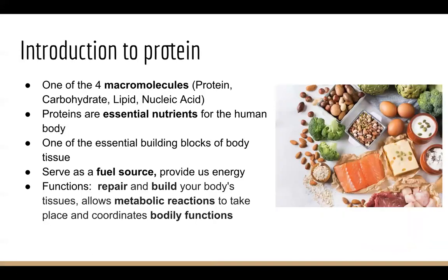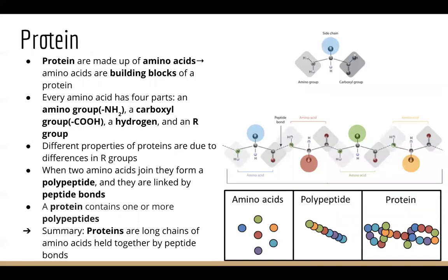But what is protein? Protein is one of the four macromolecules, which includes protein, carbohydrate, lipid, and nucleic acid. I'll be introducing the other three in the next following lectures. Proteins are essential nutrients for the human body and are also one of the essential building blocks of our body tissue. Our muscles, which allow us to move, contain a lot of protein. Proteins also serve as a fuel source and provide us energy — when you eat meat or salmon, it provides us energy. Some of the common functions of proteins include repairing and building your body's tissues, allowing metabolic reactions to take place, as well as coordinating our bodily functions. Now I want to talk about protein at a molecular and biological level.